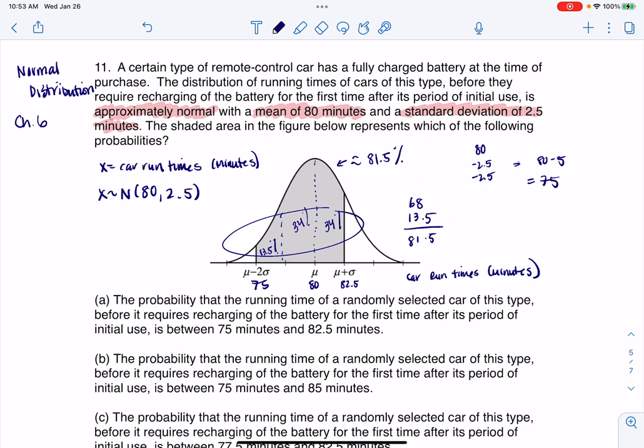So let's see. The shaded area - I want to go back to this question over here. So the shaded area in the figure below represents which of the following probabilities? All right. So it represents the probability that the car runs between 75 and 82.5 minutes. So let's see. The probability - let me read A. The probability that the runtime of a randomly selected car of this type before it requires recharging of the battery for the first time after its period of initial use is between 75 minutes and right there, 82.5 minutes. That's it.